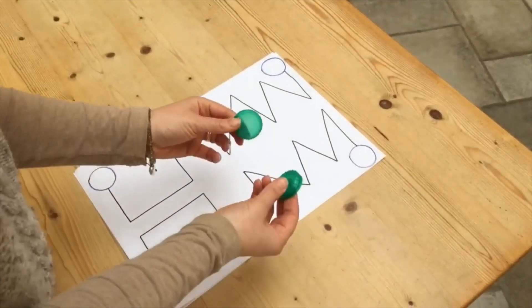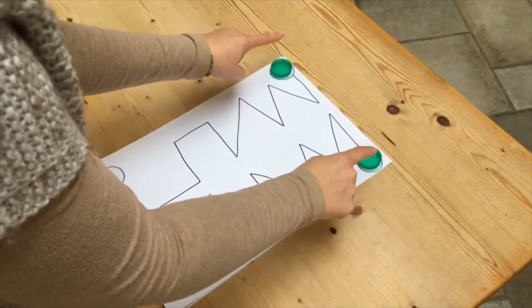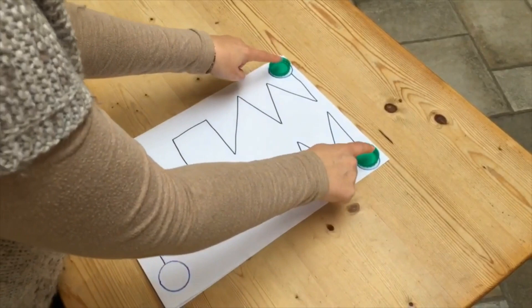Okay, so we start by putting the bottle caps on the circles at the top and using your fingers. The aim is to keep them both going at the same time. Off we go.